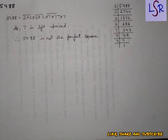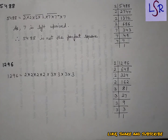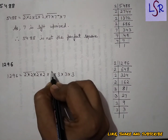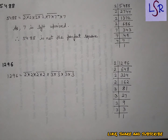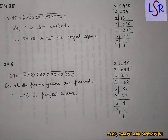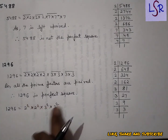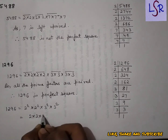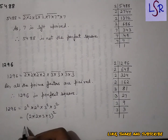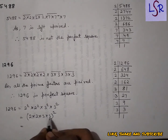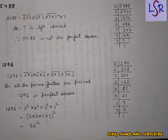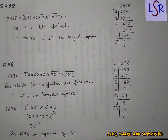In question number 2, we have to show that each of the following numbers is a perfect square and also find whose square it is. The first part is 1296. We find the prime factors of 1296, write them in product form, and then go for pairing. As we see, all of them are paired, hence it is a perfect square. To find the number of which it is the square, we write it as 2 × 2 × 3 × 3 whole squared, which equals 36 squared. So 1296 is the square of 36.